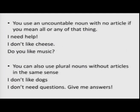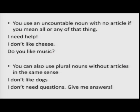Similarly, you use an uncountable noun with no article when you mean all of it or any of that particular thing. For example, 'I need help' — any kind of help. 'I do not like cheese' — probably you do not like any of those kinds of cheese. 'Do you like music?' refers to a person's hobby — some or all forms of music. That is why there is no article. You can also use plural nouns without articles in the same generic sense, such as 'I do not like dogs' or 'I do not need questions, give me answers.'